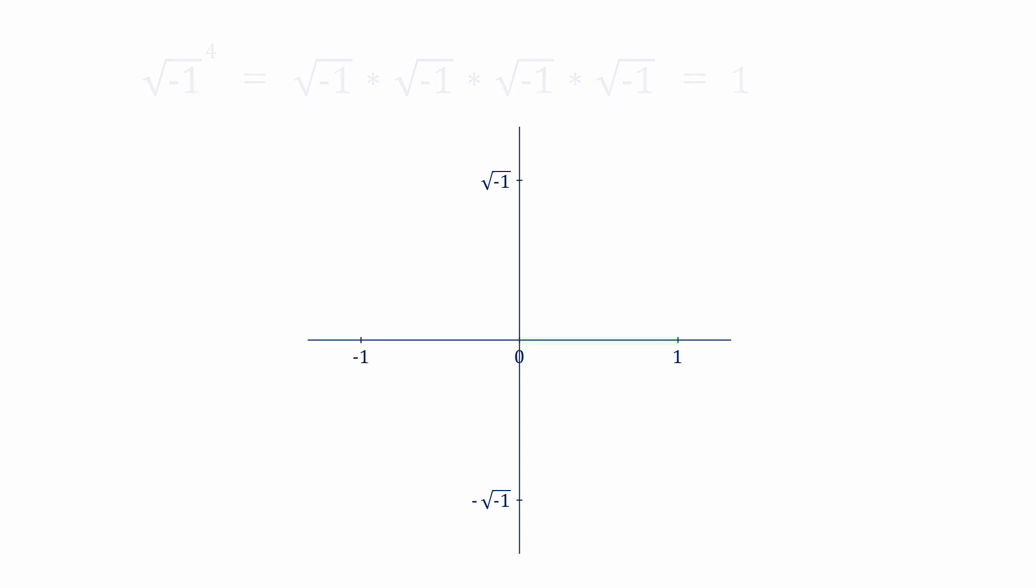Finally, the square root of minus one raised to the power of five must be equal to the square root of minus one, because it's equivalent to one times the square root of minus one. Effectively, a full 360 degree rotation. Notice that each time we raise the square root of minus one to another power, we effectively rotate it by another 90 degrees.